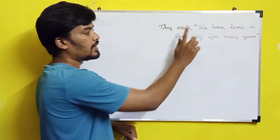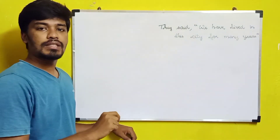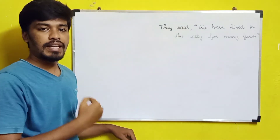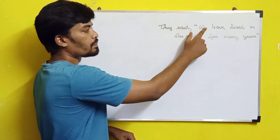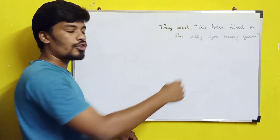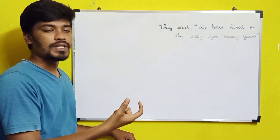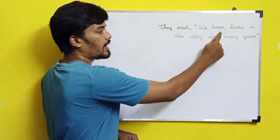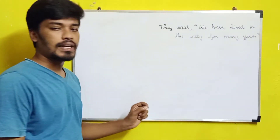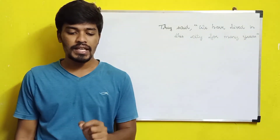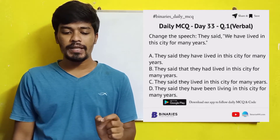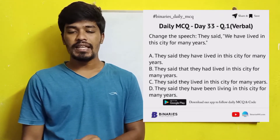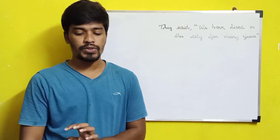To convert to indirect speech, we remove the quotation marks and the comma. "We" will become "they" in the indirect speech. Instead of "have", we have to change the tense of the sentence, so "have" will become "had". The answer becomes: "They said that they had lived in this city for many years." So option B is the correct answer for the first question.